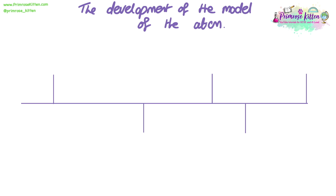The model of the atom has changed many times in history. Here we're going to look at some of the main models and main suggestions for models — how we've developed those models over time, what changes have we made, and where have those changes come from.